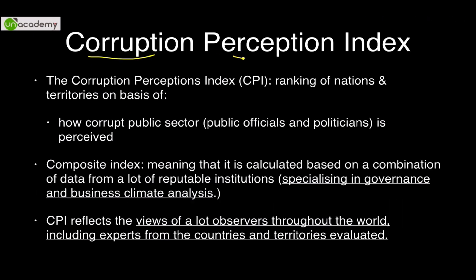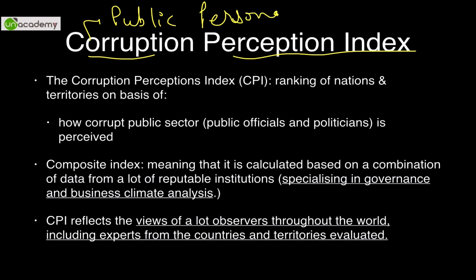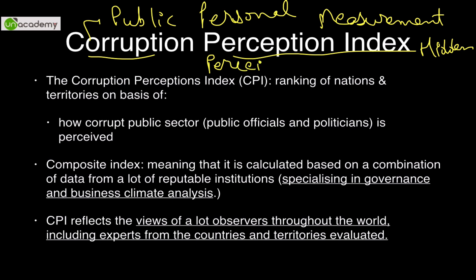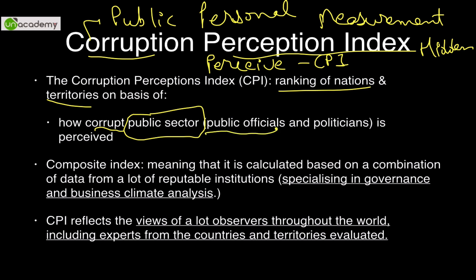What is the Corruption Perception Index? Corruption is the use of public power for personal gain. It is not a corruption measurement index — because real corruption is always hidden and impossible to measure directly. So it measures how experts, bodies, groups, and institutions perceive corruption. CPI is basically a ranking of nations and territories based on how corrupt the public sector — public officials, bureaucrats, and politicians — are perceived to be.